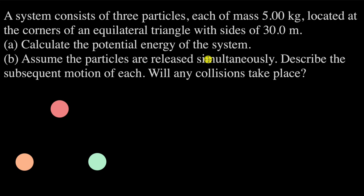Let's solve a question on gravitational potential energy. Here we have a system which consists of 3 particles, each of mass 5 kg, located at the corners of an equilateral triangle with sides of 30 meters.